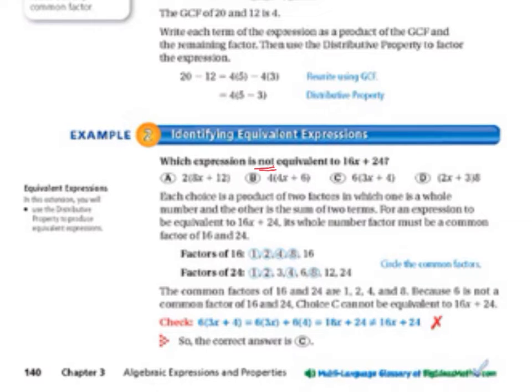For an expression to be equivalent, which means equal, to 16x plus 24, its whole number factor must be a common factor of 16 and 24. Again, we list the common factors of 16 and 24, and it says to circle the common factors. The common factors of 16 and 24, we can see that the ones that are circled are 1, 2, 4, and 8.